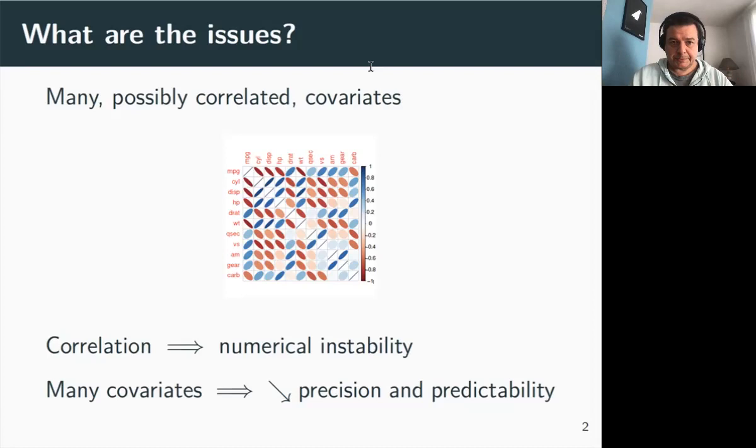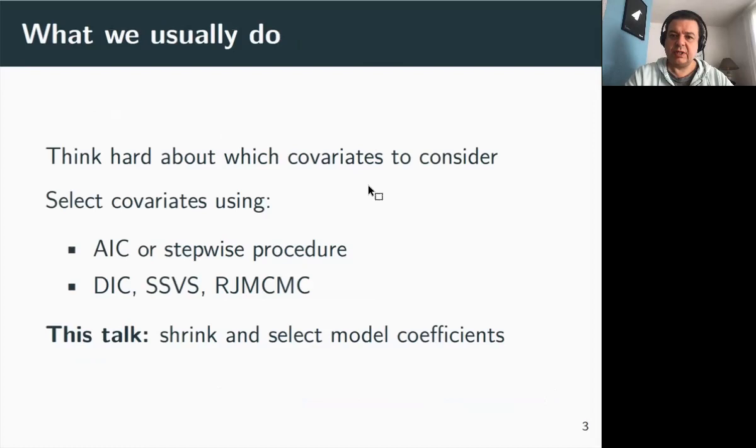So what do we usually do to deal with these issues? First, we think hard about the covariates we'd like to include in our analysis. We try to think of collinearity, drop covariates that tell the same story because they are collinear, and or use functions of these correlated covariates. But still, when you have many covariates, this is a nightmare for ecologists where to start.